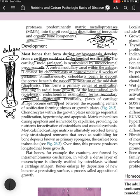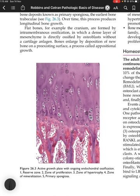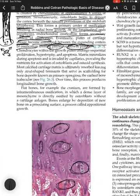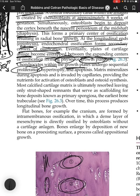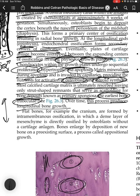Plates of cartilage become entrapped between expanding centers of ossification, forming the physis or growth plates. Within the growth plate, you see zones: reserve, proliferation, hypertrophy, mineralization, and primary spongiosa. Chondrocytes undergo sequential proliferation, hypertrophy, and apoptosis. The matrix mineralizes during apoptosis and is invaded by capillaries, activating osteoblasts. Most calcified cartilage is ultimately resorbed, leaving strut-shaped remnants as scaffolding for bone deposits — the primary spongiosa — producing longitudinal bone growth.